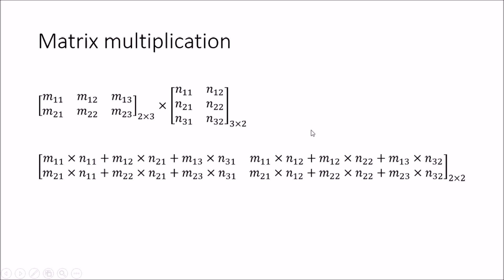Similarly, to get the two-one element we take the second row of the first matrix and multiply with the first column of the second matrix: M21×N11, M22×N21, M23×N31. Finally, to get the two-two element we take the second row and multiply with the second column: M21×N12, M22×N22, M23×N32. In this way you can perform the full matrix multiplication.